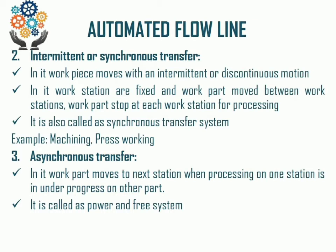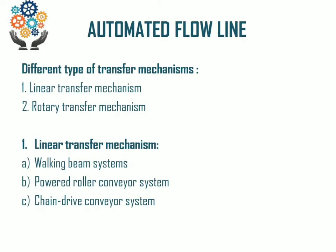The next extended Automated Flow Line type is asynchronous transfer, in which the work part moves to the work station while processing at another work station is underway. It is called a power and free system. There are different types of transfer mechanisms: linear transfer mechanism and rotary transfer mechanism. In linear transfer mechanisms, we have the walking beam mechanism, powered roller conveyor system, and chain drive conveyor system.